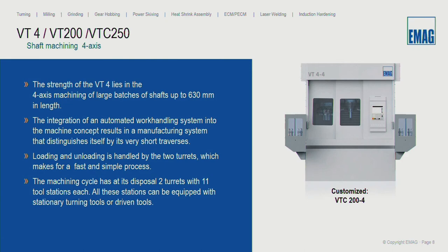Let's talk about the machine we mostly use for the scroll free turning process. It's our shaft machining types: VT4, VT200 with the Siemens control system. We developed the technology a few years ago with the VTC 250. All these machines have their strength in four-axis machining of shafts up to 630 millimeters in length. There is an automated work handling system in these machines, with loading and unloading handled by two turrets.